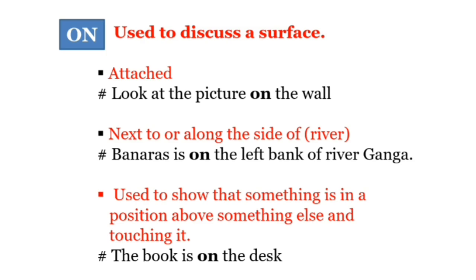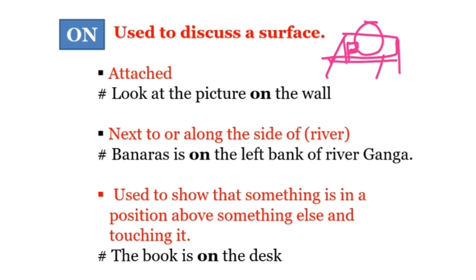Next, हम बात करते हैं 'on' की। On is used to discuss a surface — surface याने कोई सतह। अगर एक table है और उसके ऊपर एक ball रखा है, तो ball इस table के surface को touch कर रहा है — मतलब ball table की सतह पर है। 'On' को surface बताने के लिए use करते हैं। Surface से attached होना चाहिए — जैसे 'Look at the picture on the wall' — picture दीवार पर टंगी हुई है और उस दीवार से attached है, इसलिए 'on' use होगा।